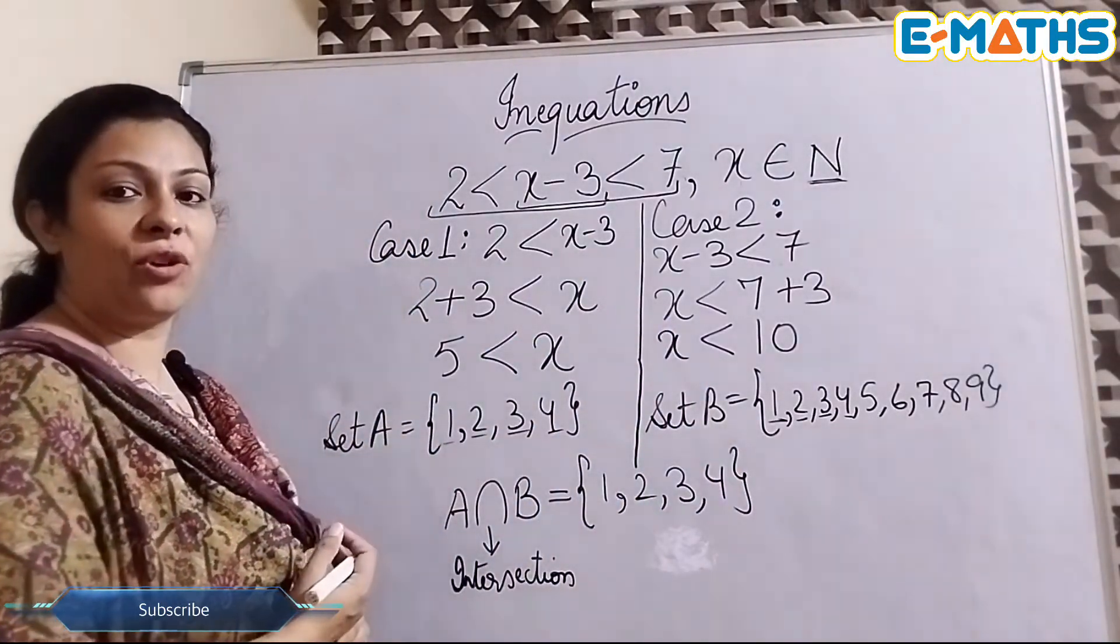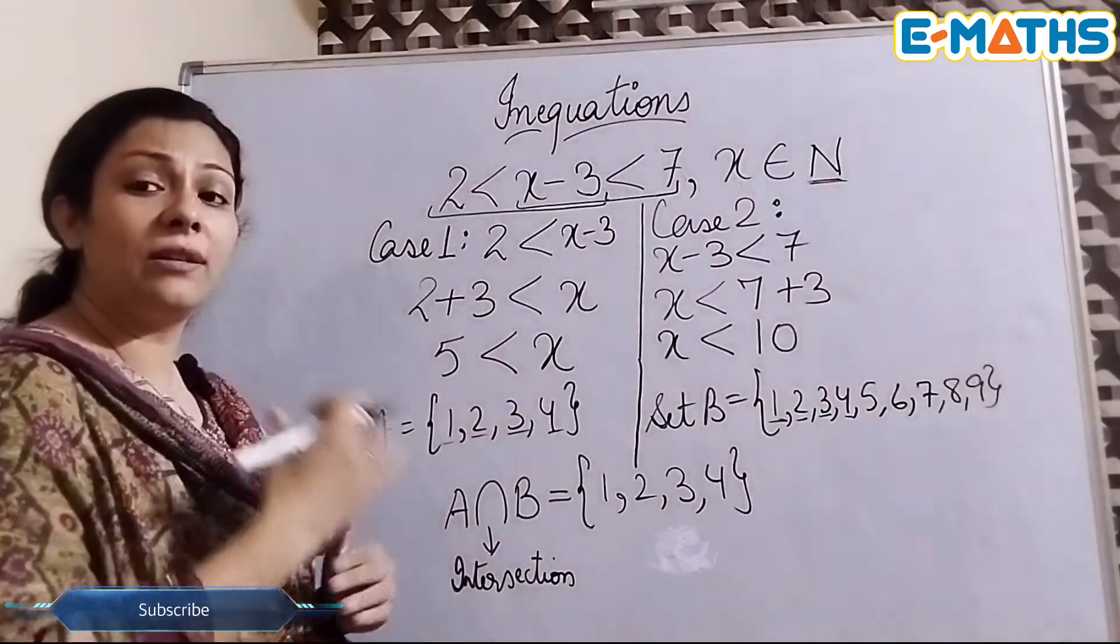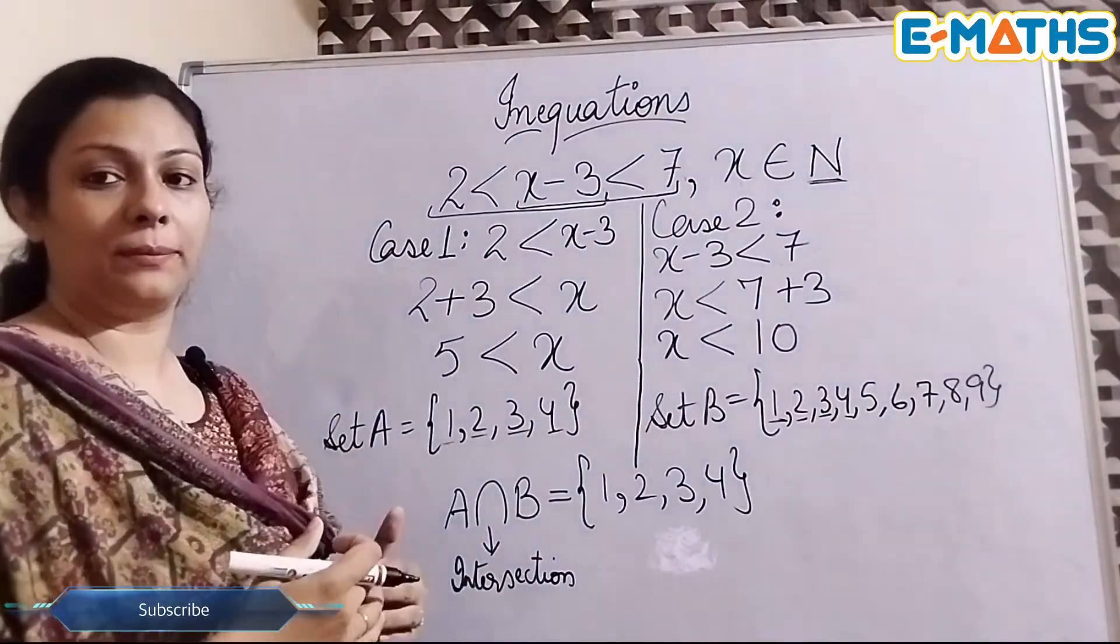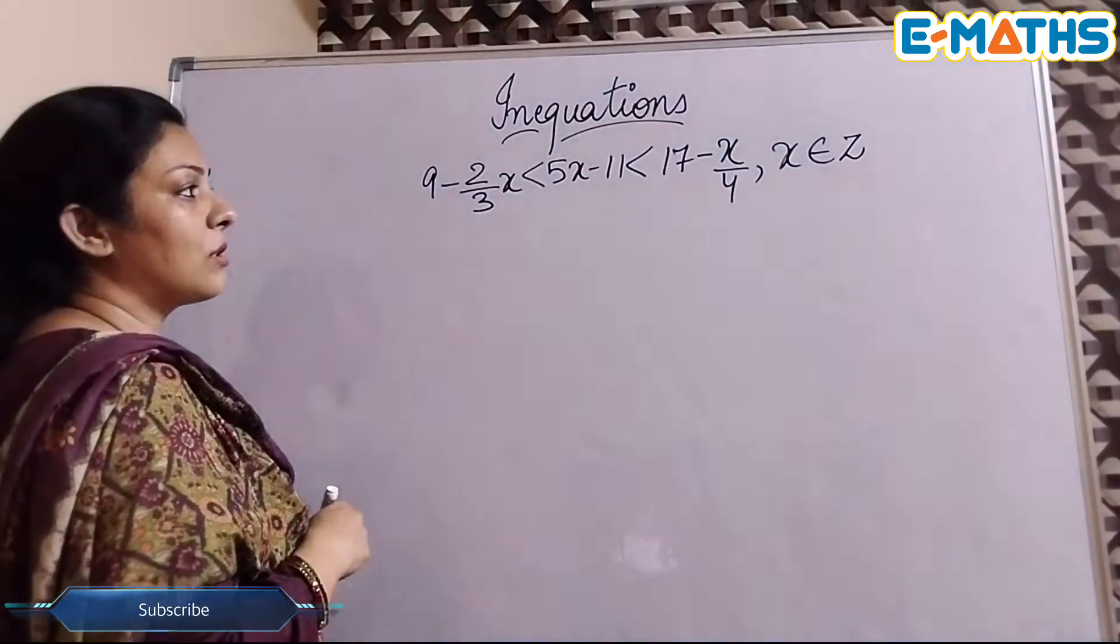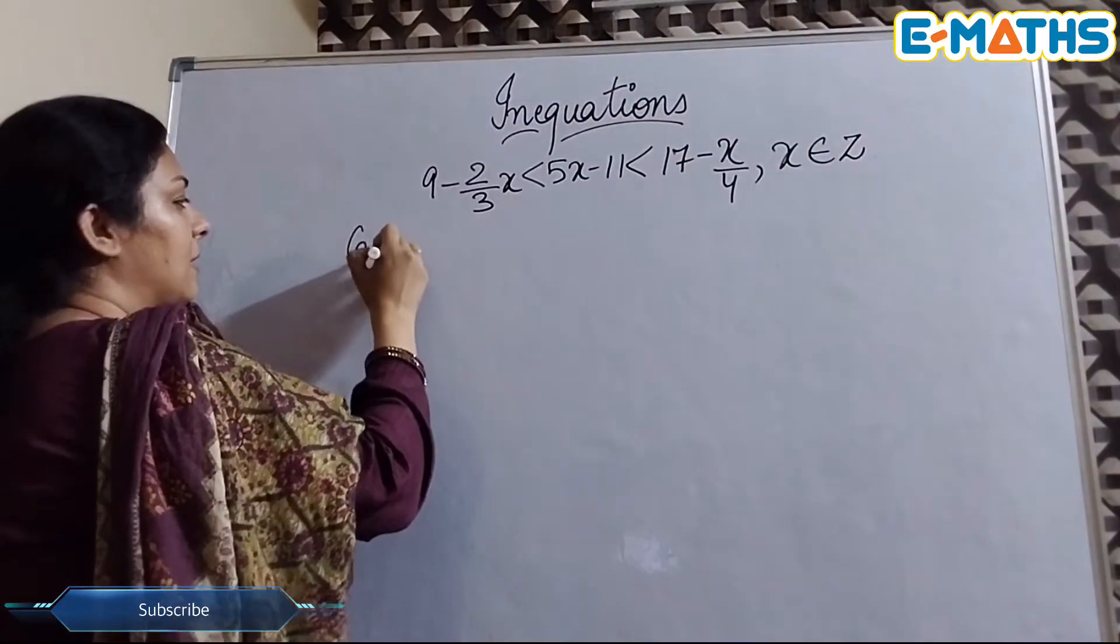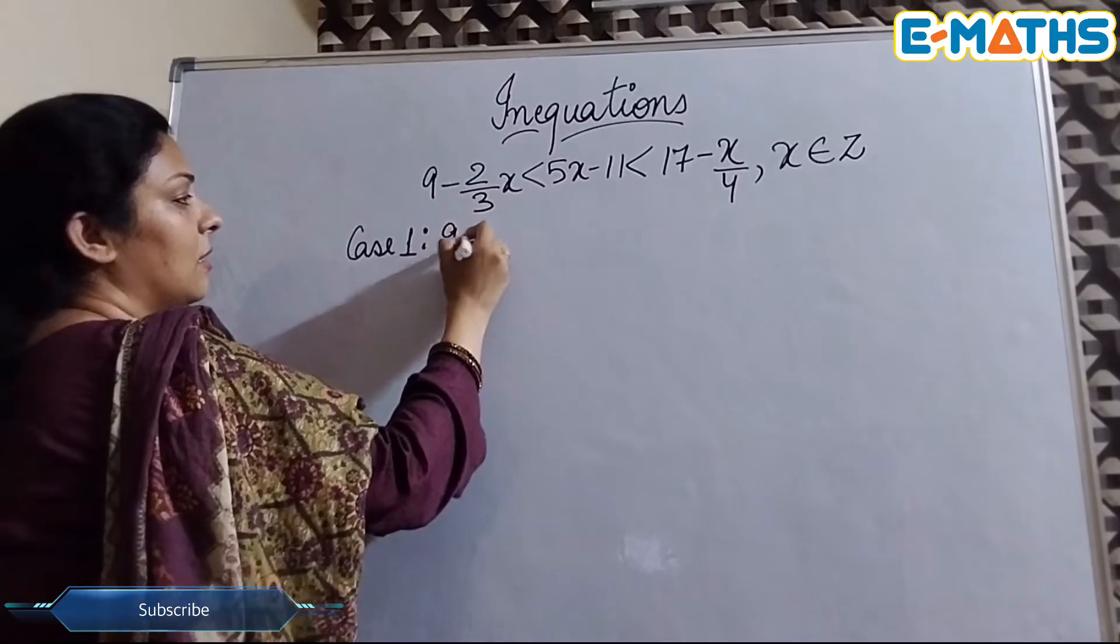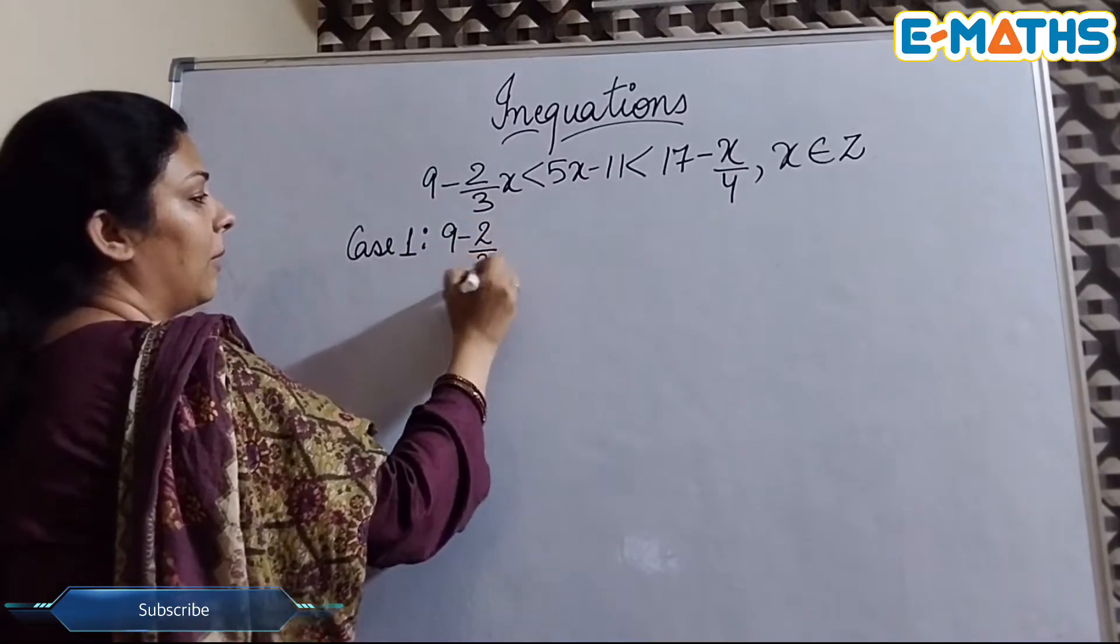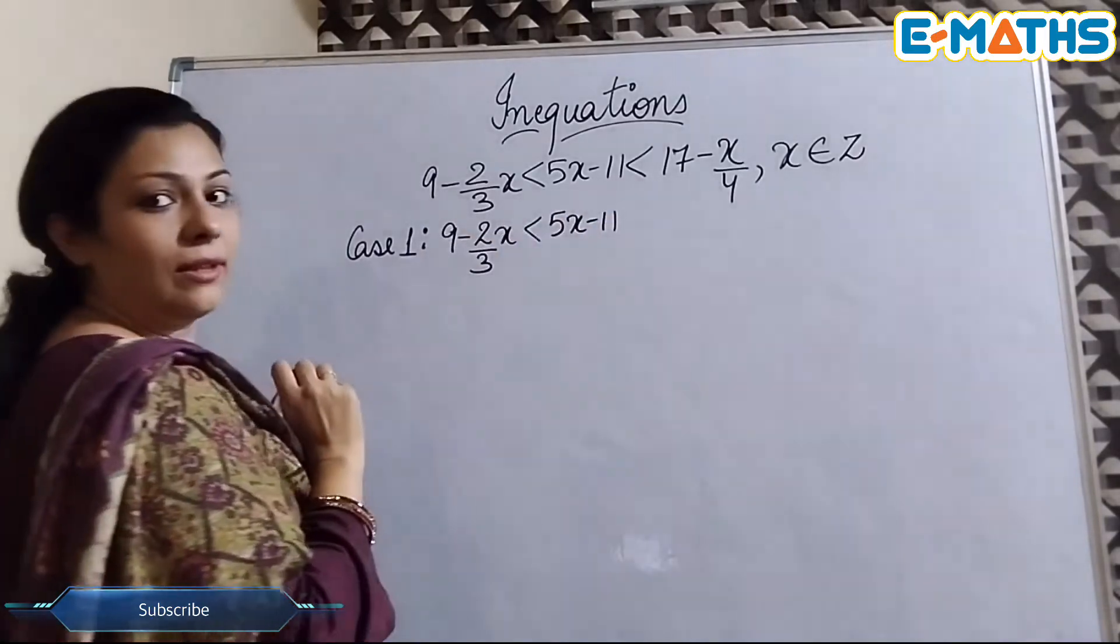This is one question that I've solved. Now I'm going to take a little bit difficult question so that you understand it in a better way. Now I've taken this question which is having some rational numbers also. Let's solve it. As I told you, we have to solve cases. So case 1 will have the first two expressions. So here we have 9 - 2/3x < 5x - 11.